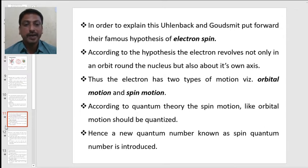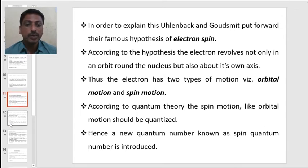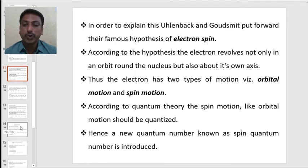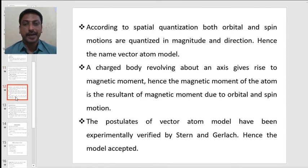According to quantum theory, the spin motion like orbital motion should also be quantized. Hence, a new quantum number known as spin quantum number is introduced. According to spatial quantization, both orbital and spin motions are quantized in magnitude as well as in directions. Therefore, the name of the model is given as vector atom model where both the factors—space quantization as well as electron spin—are vector quantities.